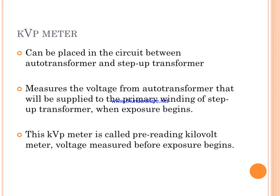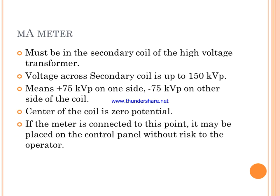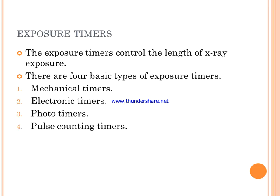The kVp meter measures the voltage from the auto transformer that will be supplied to the primary winding of the step-up transformer when exposure begins. It is also called a pre-reading kilovolt meter, measuring voltage before exposure begins. The mA meter is connected to the secondary coil, which is up to 150 kVp — plus 70 kVp on one side and minus 70 kVp on the other, with the center of the coil at zero potential.